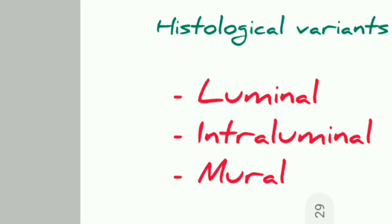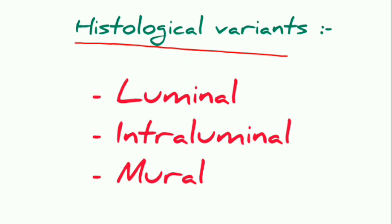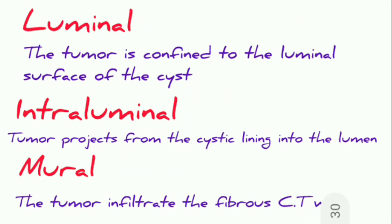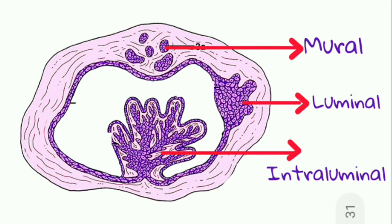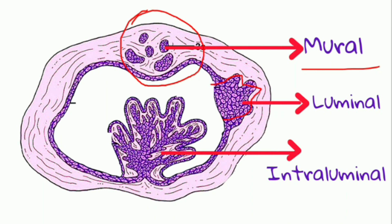Histological variants of unicystic ameloblastoma are: luminal (tumor confined to the luminal surface of the cyst), intraluminal (tumor projection from cystic lining into the lumen), and mural (tumor infiltrating into fibrous connective tissue). In the diagram, mural type shows tumor masses in connective tissue, luminal within the cystic lining, and intraluminal within the lumen.